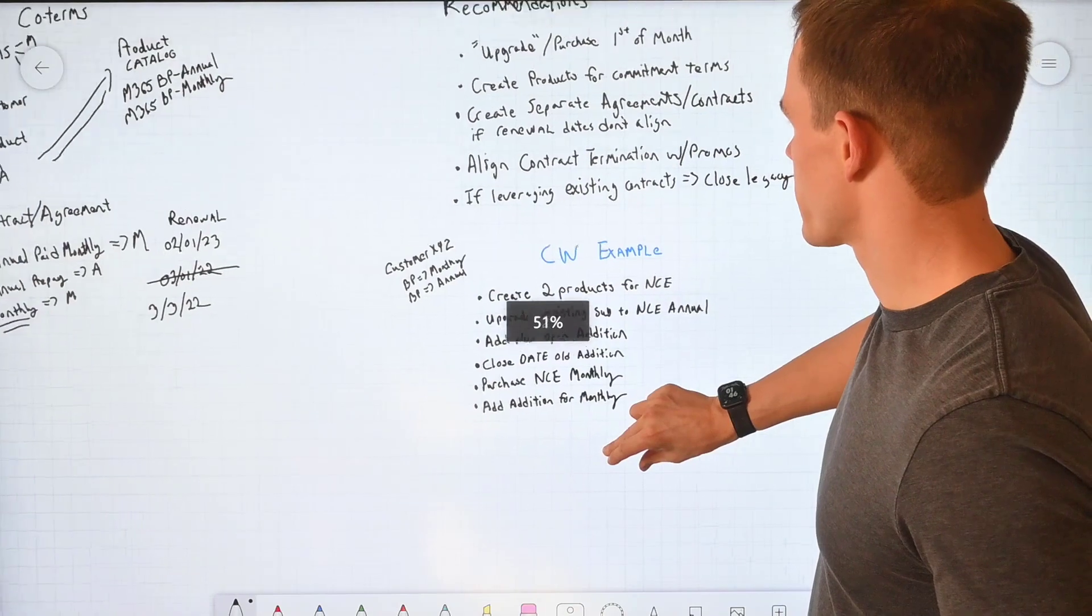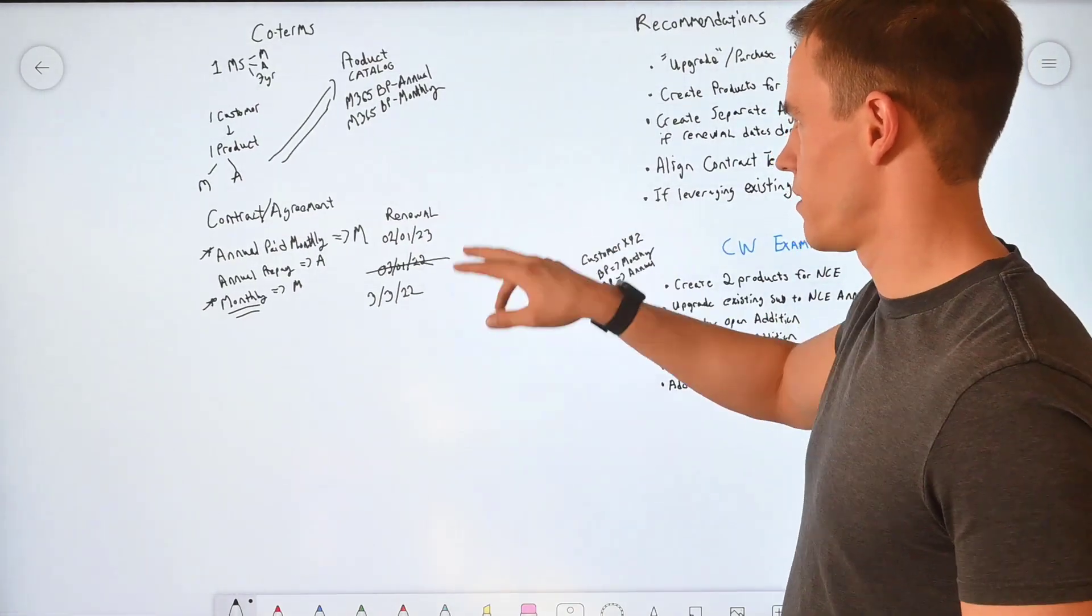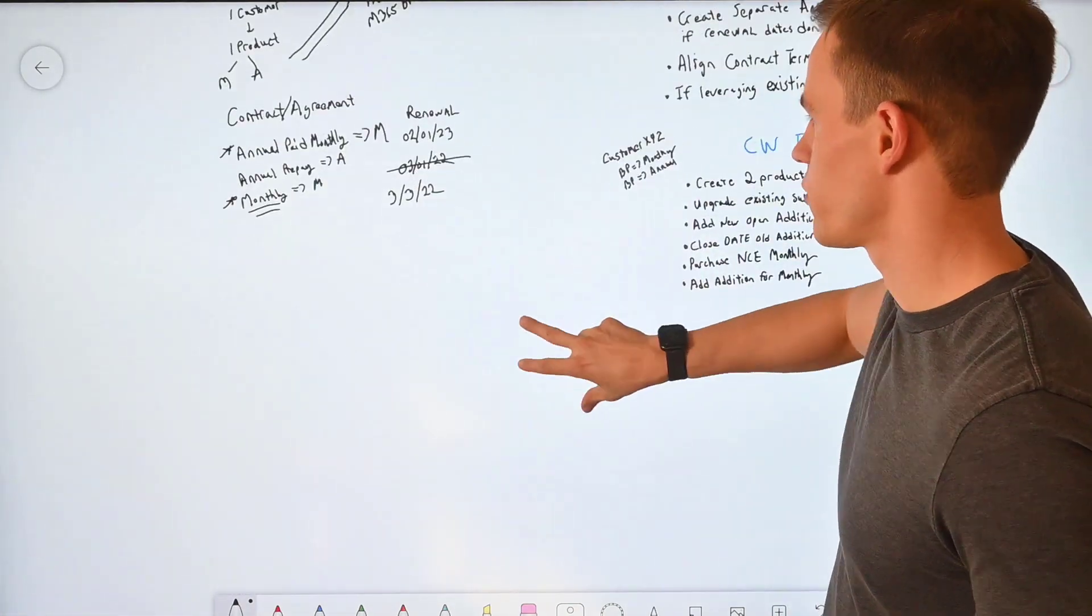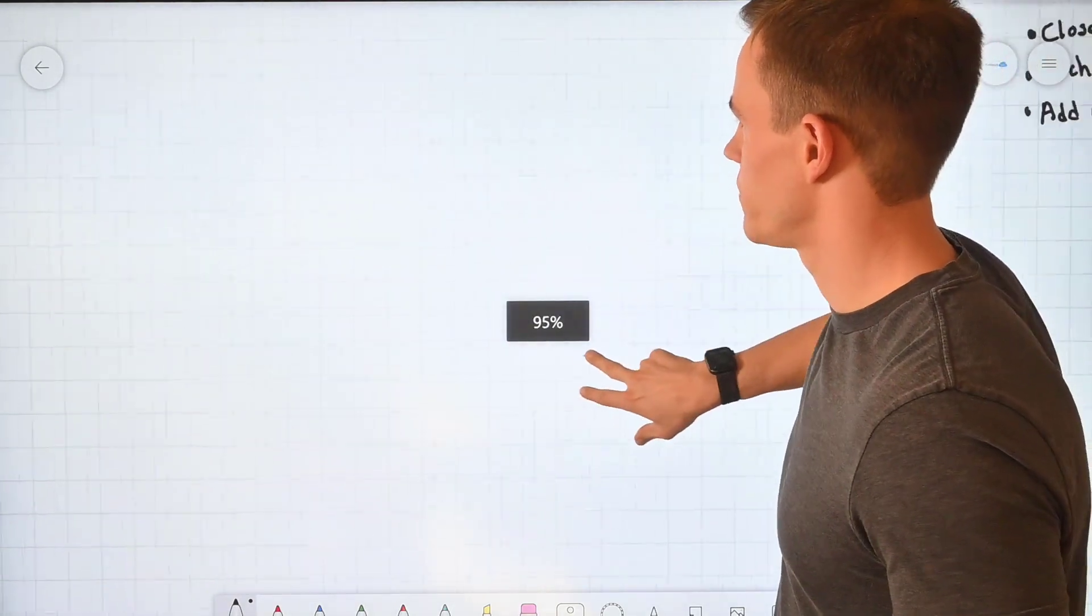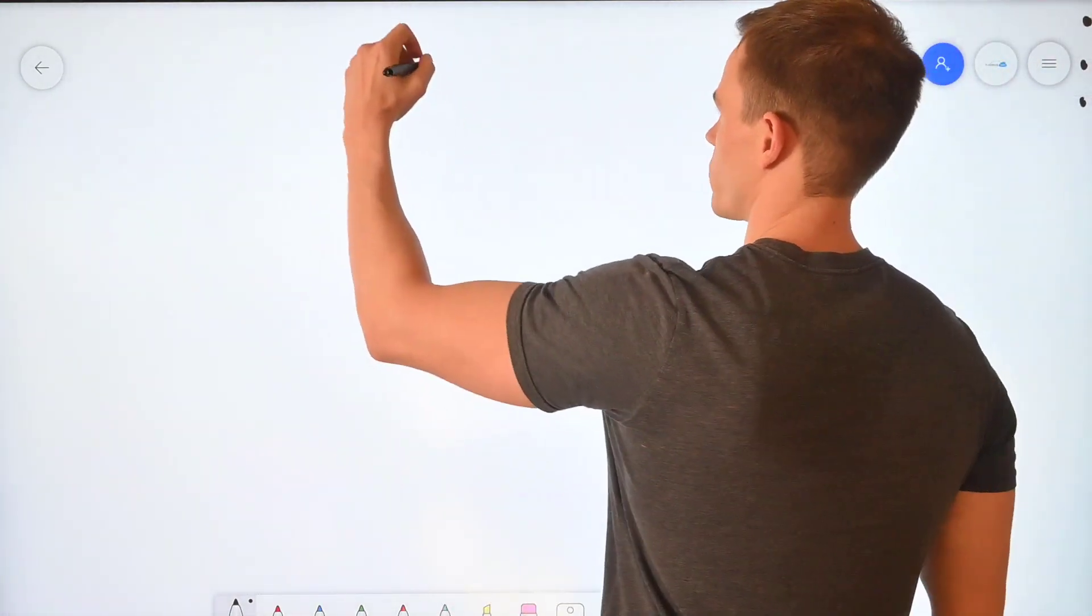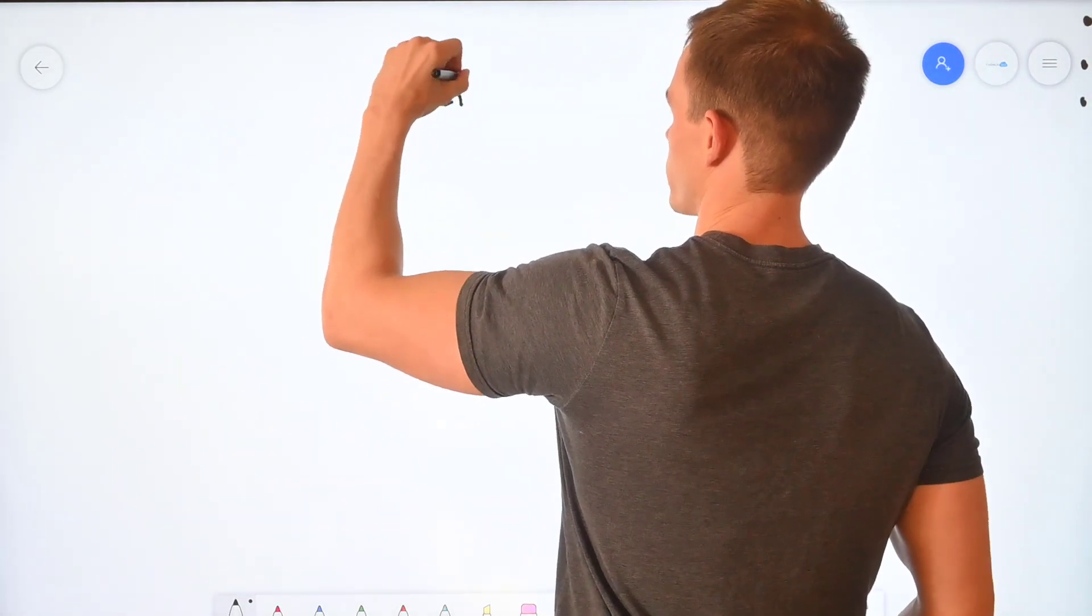So these are some of the major considerations there from co-terms and just examples. I quickly wanted to go into the pricing example as well, or pricing changes really.